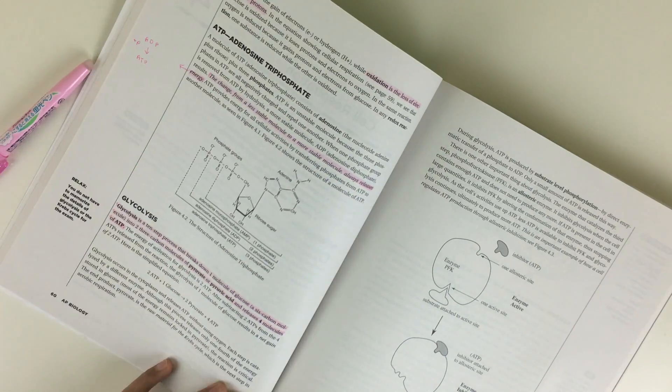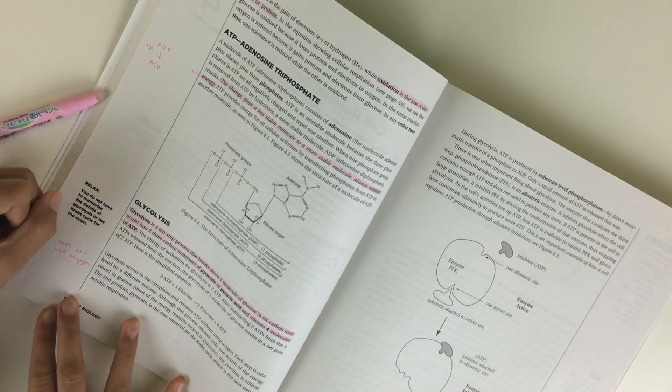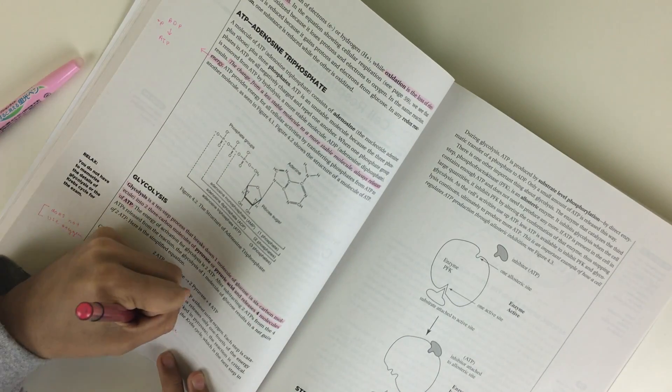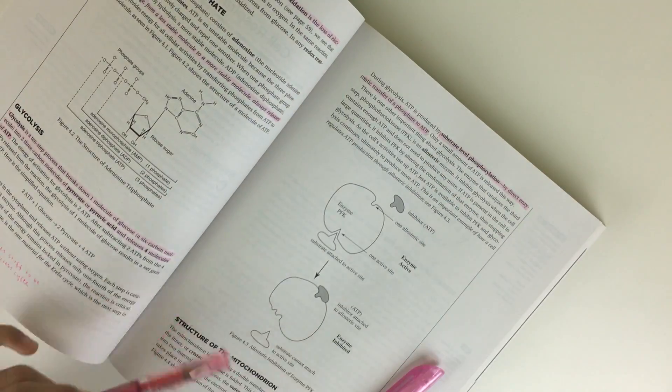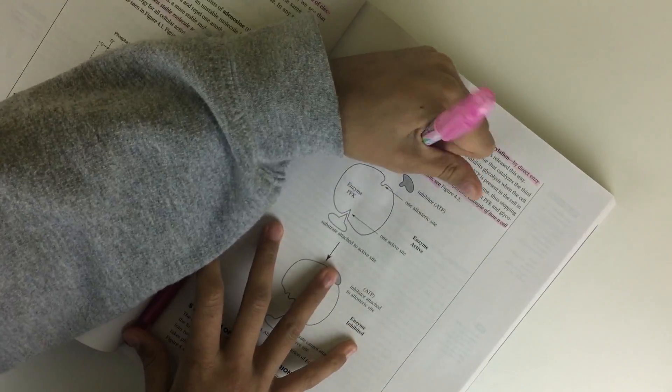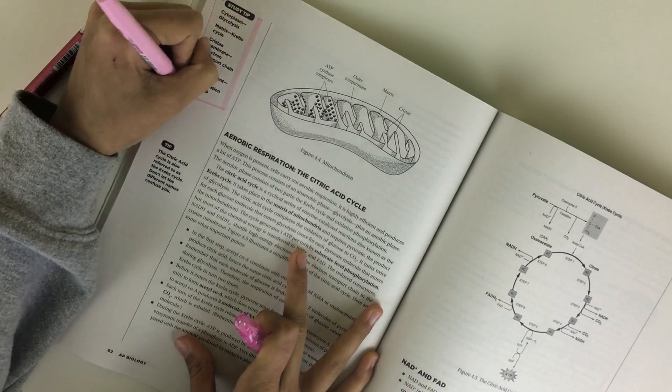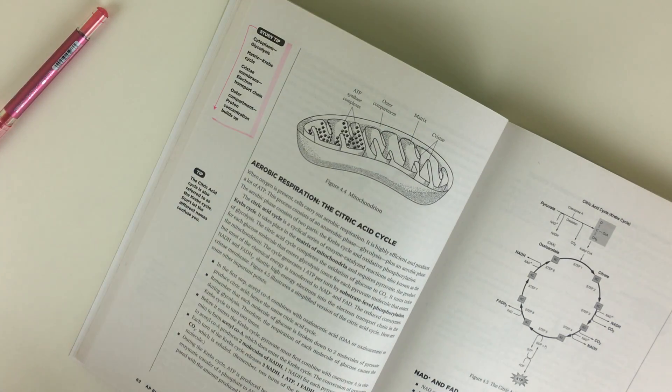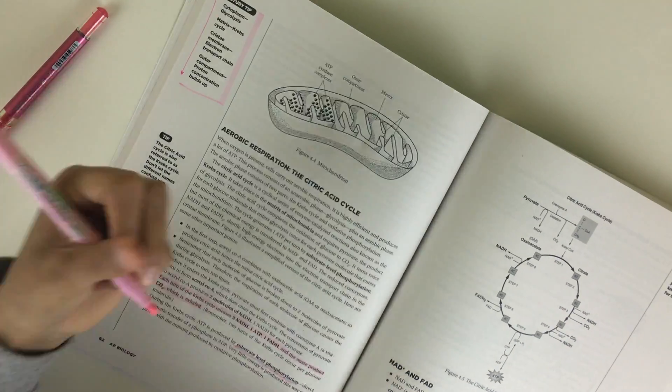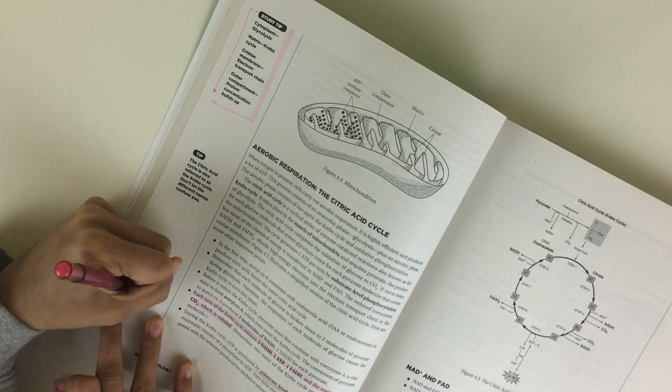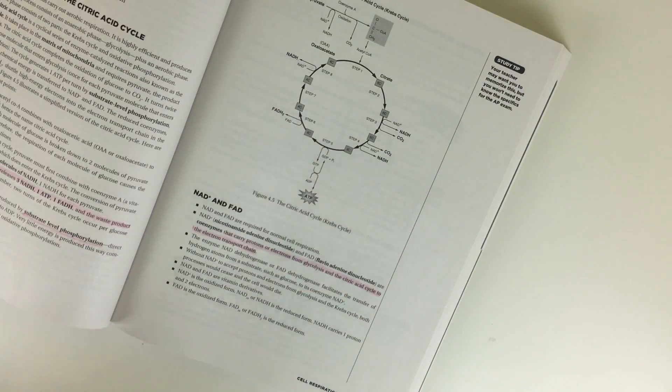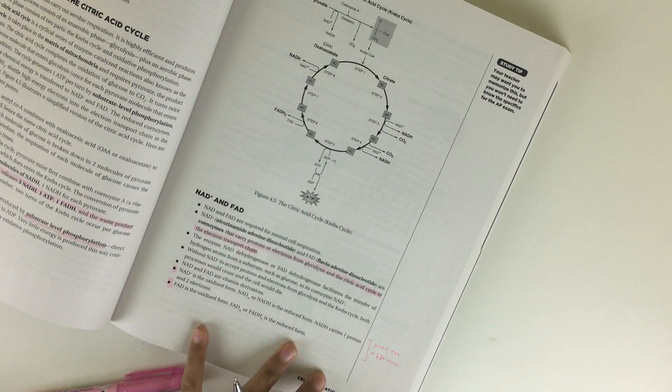...is super helpful for me because I'm seeing the information presented in different ways really solidifies that in my memory. So as I go through the chapter in both the Princeton review and the Barron's guide I highlight and annotate in the margins any important information or information that I need to double check on or absolutely make sure I remember...